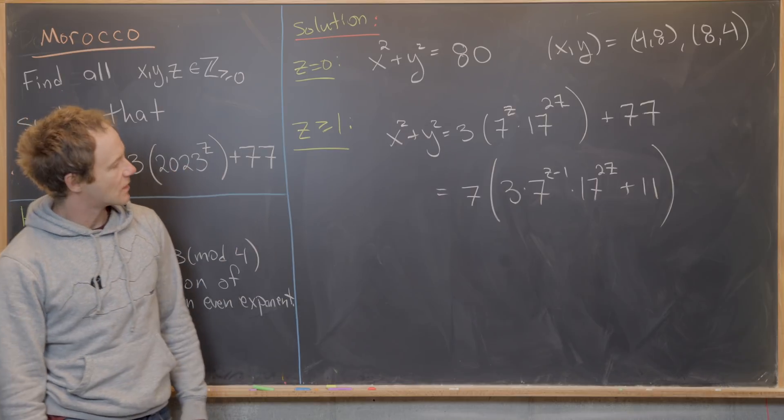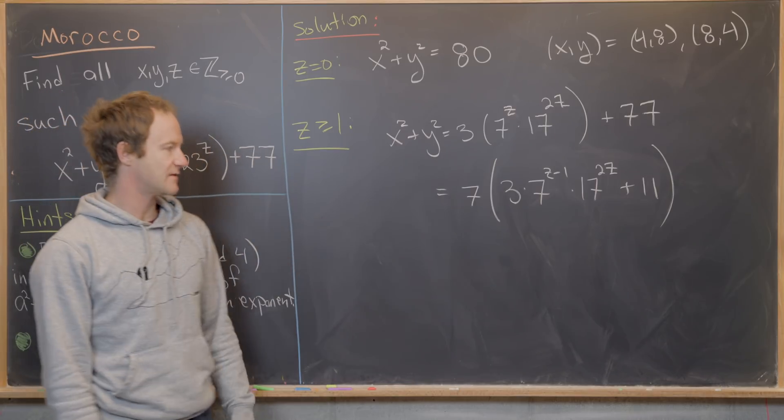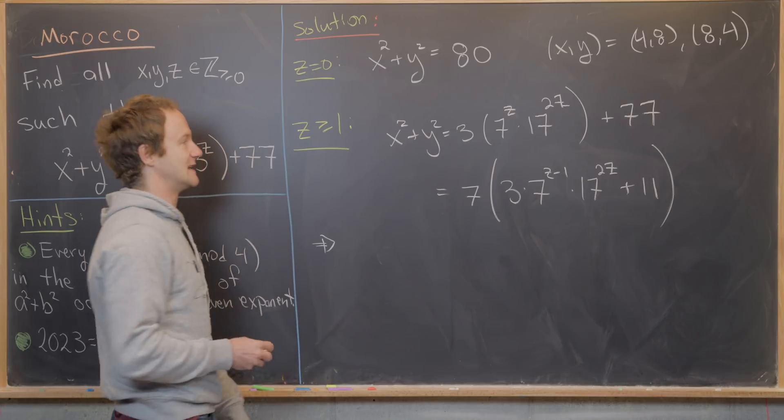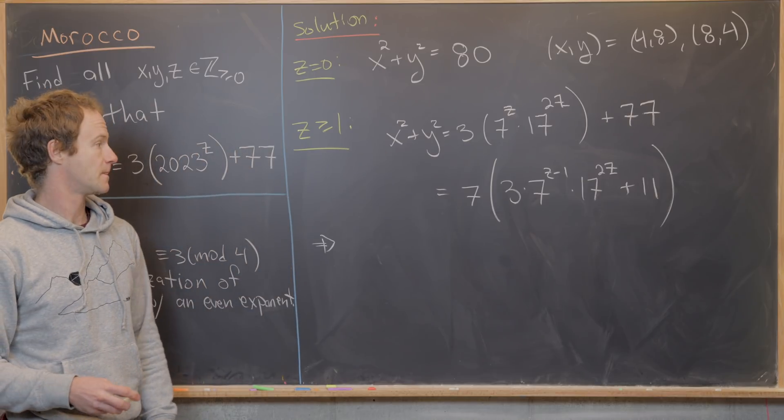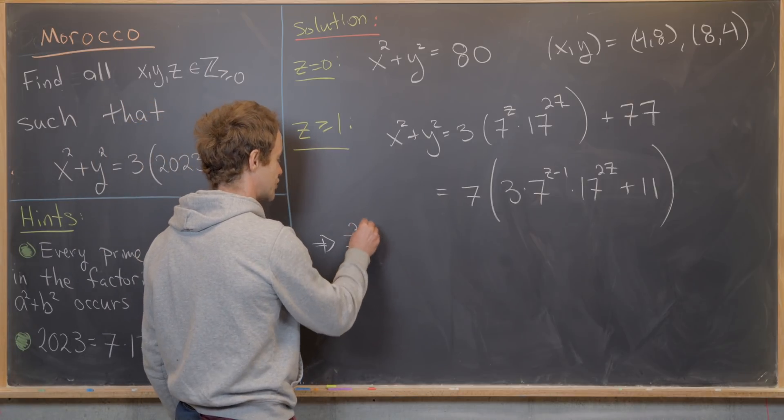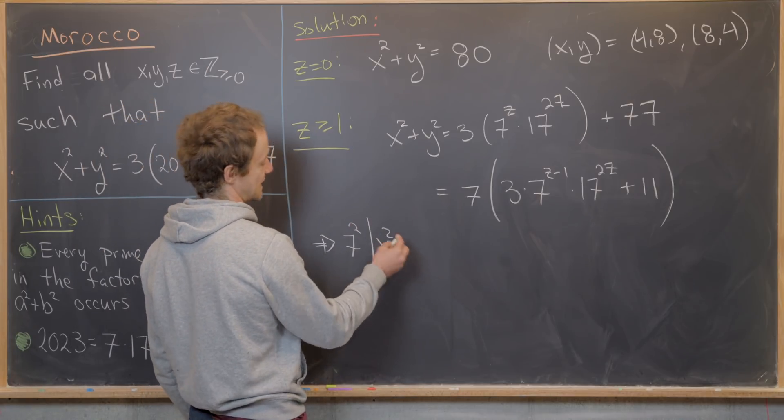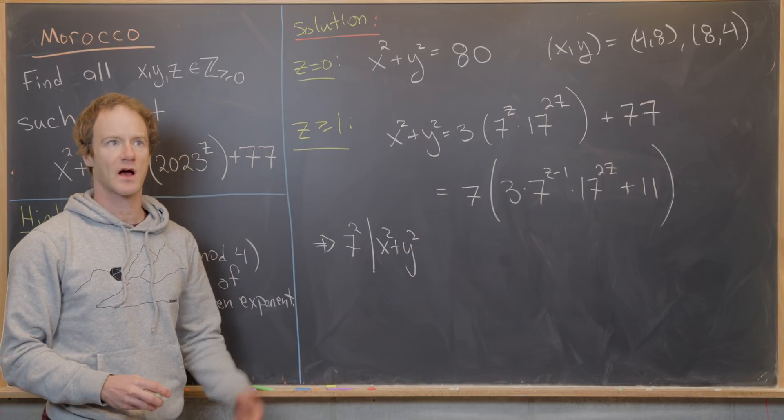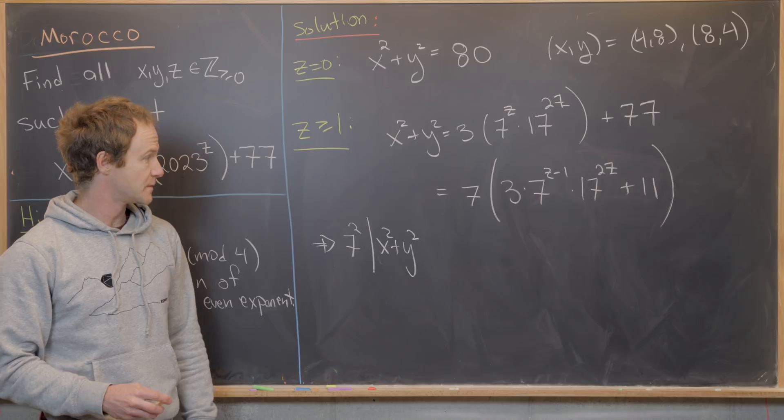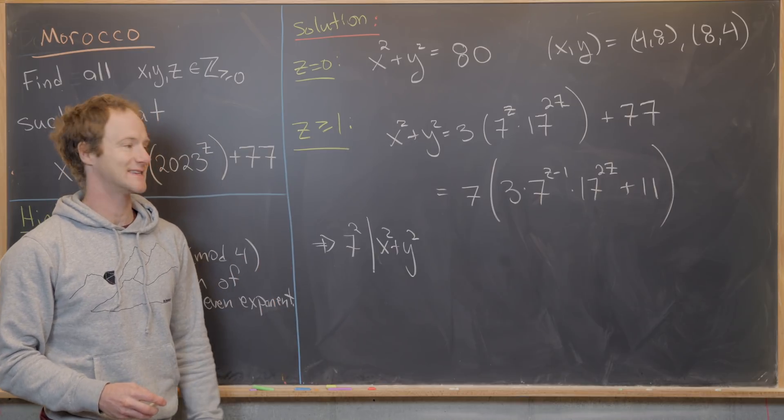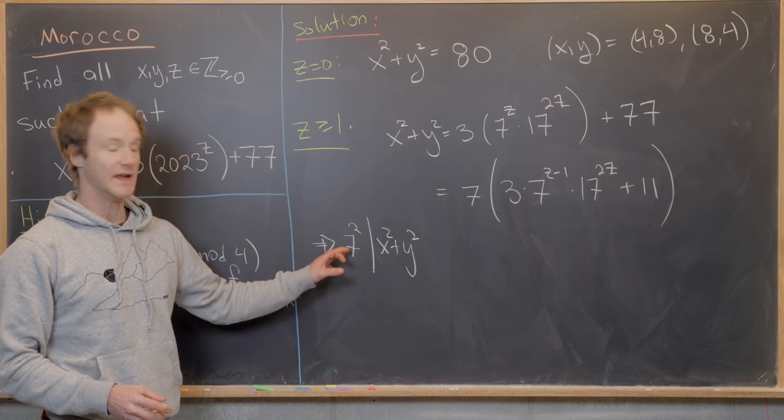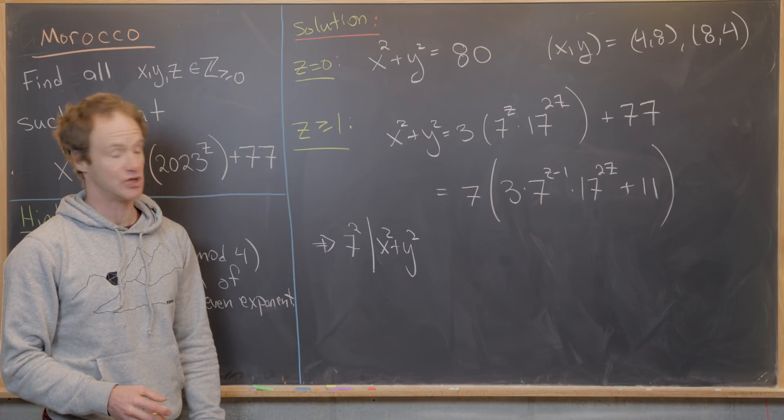Okay, nice. So next we see that 7 divides the right hand side, but that tells us that 7 divides the left hand side, but that tells us that 7 squared divides the left hand side. And that's because 7 is a prime of the form 3 mod 4, which means it occurs as an even exponent in the prime factorization. So it occurs with at least an exponent of 2.